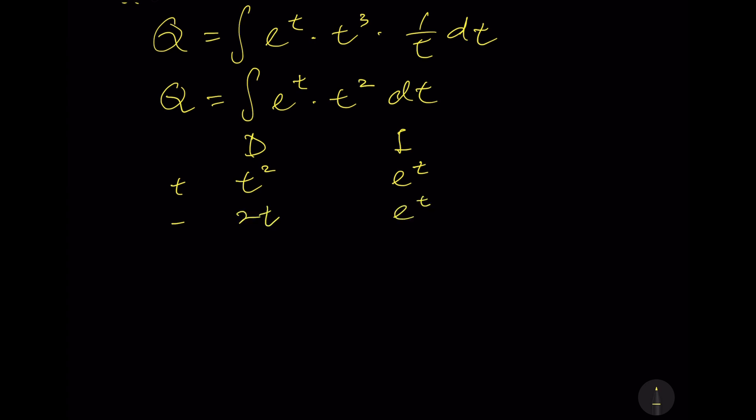Third row is positive: we have 2 for D and e^t for I. Next row is negative: D becomes zero while I is still e^t. We obtain Q equals t^2 multiply e^t minus 2t multiply e^t plus 2e^t plus constant C.